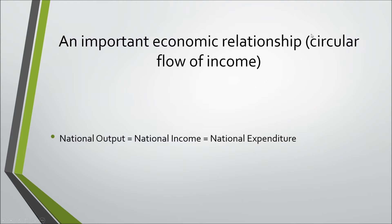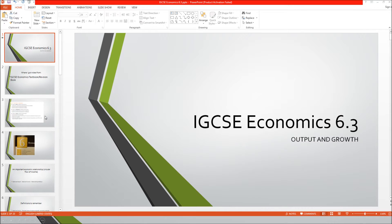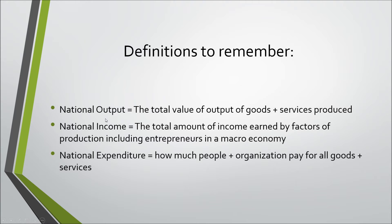Starting with point number one: this is the circular flow of income. The key relationship is that national output equals national income equals national expenditure. GDP can be measured using different methods. National output is the total value of goods and services produced. National income is the total amount of income earned by factors of production, including entrepreneurs, in a macro economy.